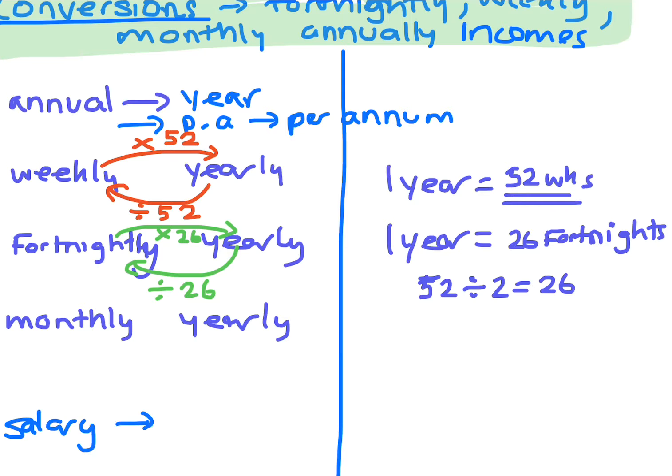Okay, so now if you look at monthly, you want to go from monthly to annually. Monthly, you times by 12. And when you're going back to per month, you divide by 12. Because in one year, there are 12 months.